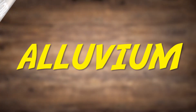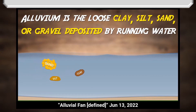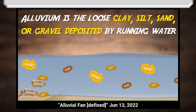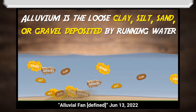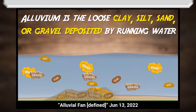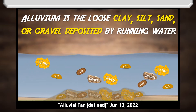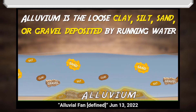To define anastomosing streams, we need to define alluvium, which I covered earlier in the definition for alluvial fan. Alluvium is the loose clay, silt, sand, or gravel deposited by running water. In this animation you can see various sediments flowing through this river. Eventually the sediments will slow down and deposit. That deposited mixture is alluvium.